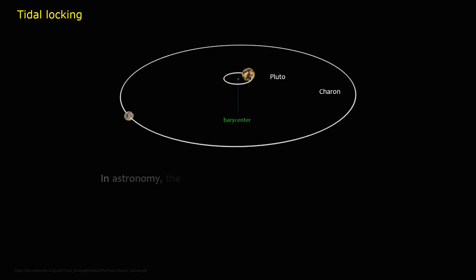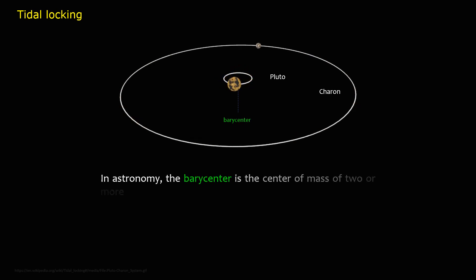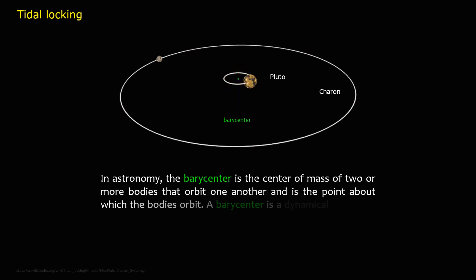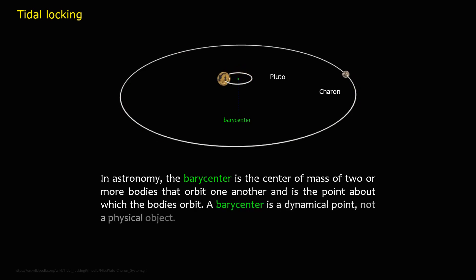In astronomy, the barycenter is the center of mass of two or more bodies that orbit one another, and is the point about which the bodies orbit. A barycenter is a dynamical point, not a physical object.